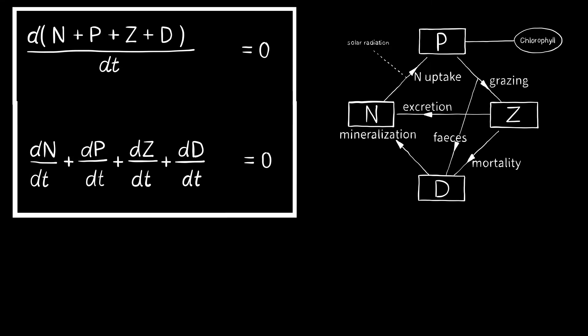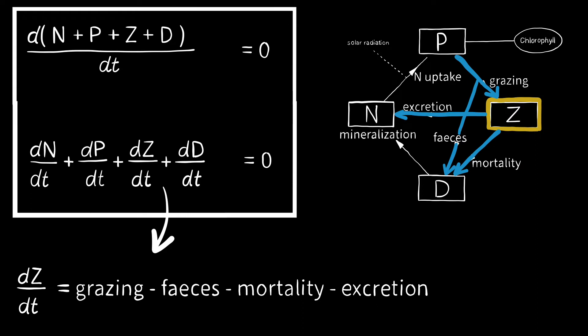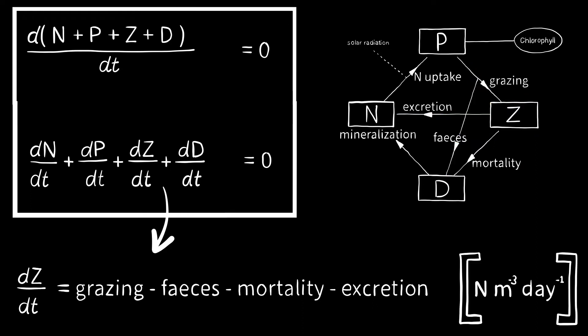The change in each variable, or the mass balance equations, are composed of everything that comes in and everything that goes out. Note that these flows are summed, so they should all have the same units.